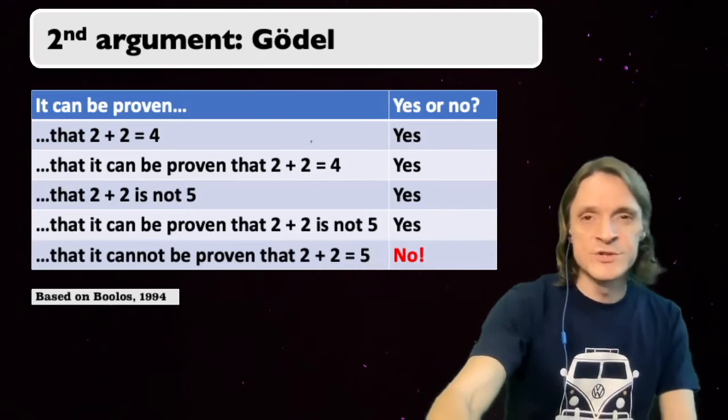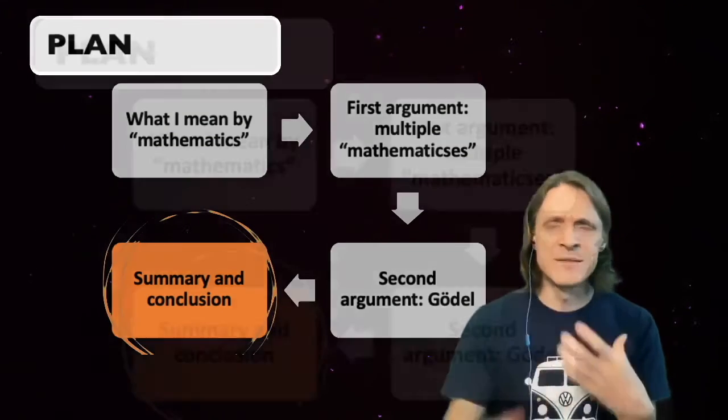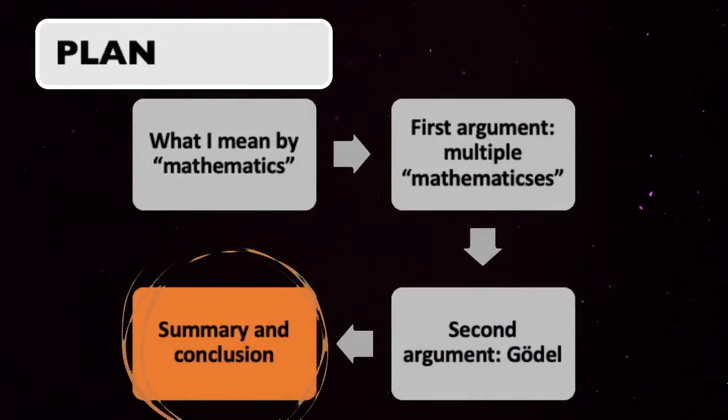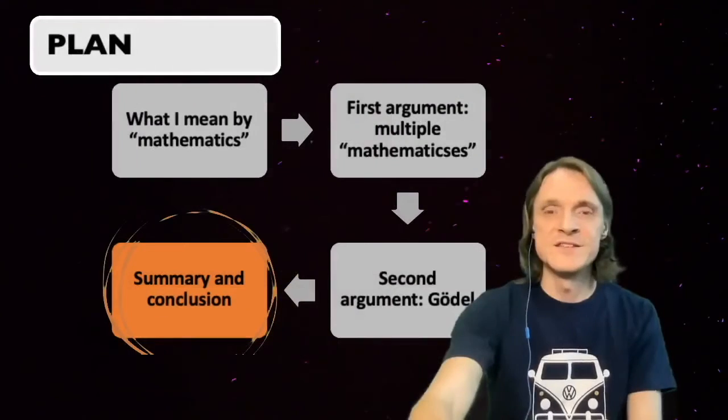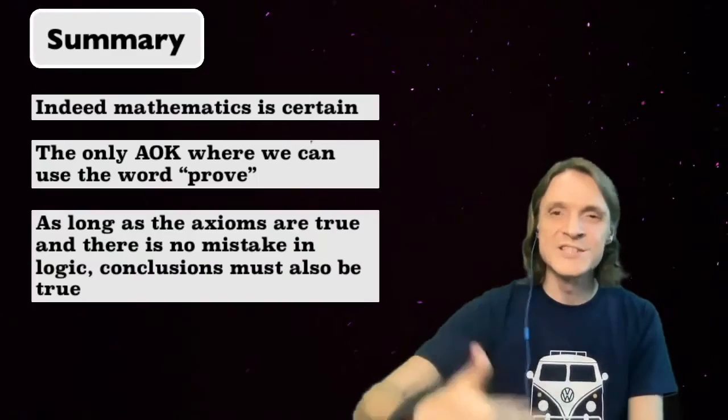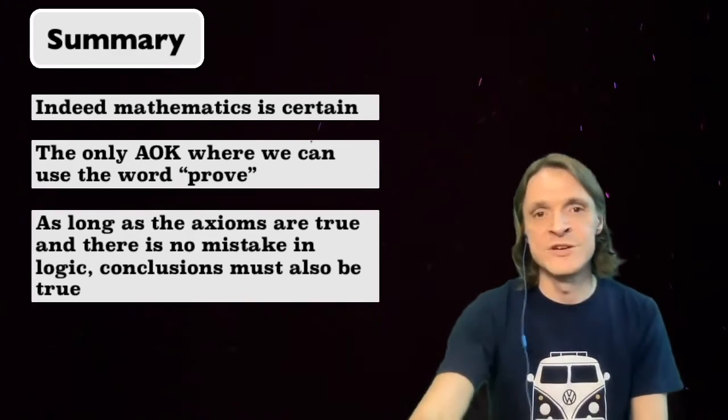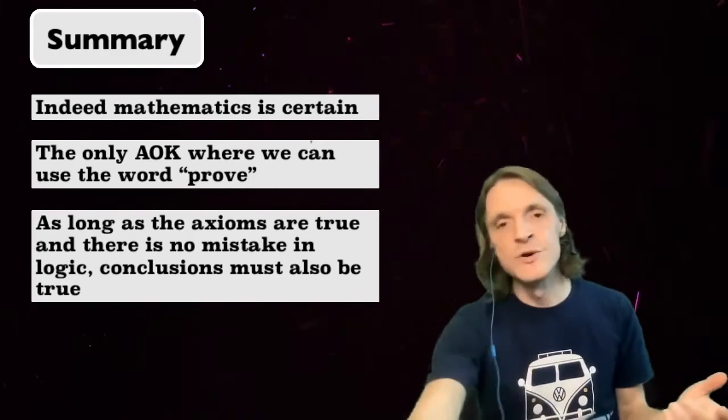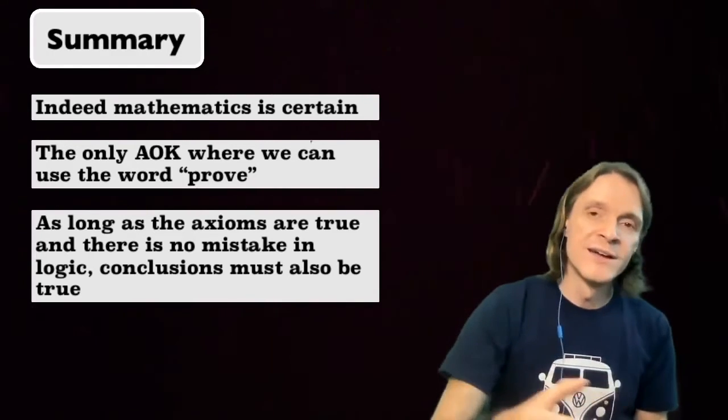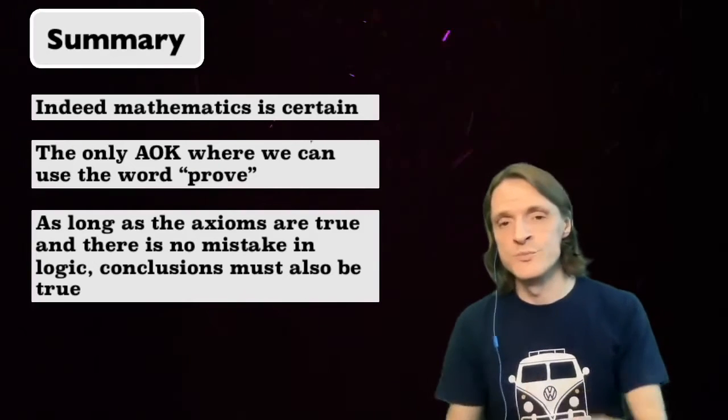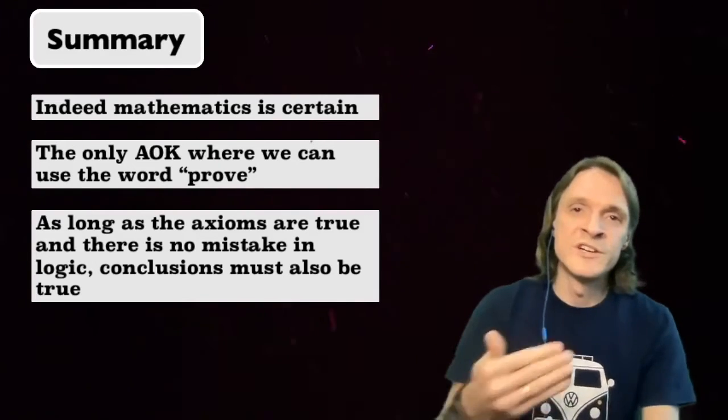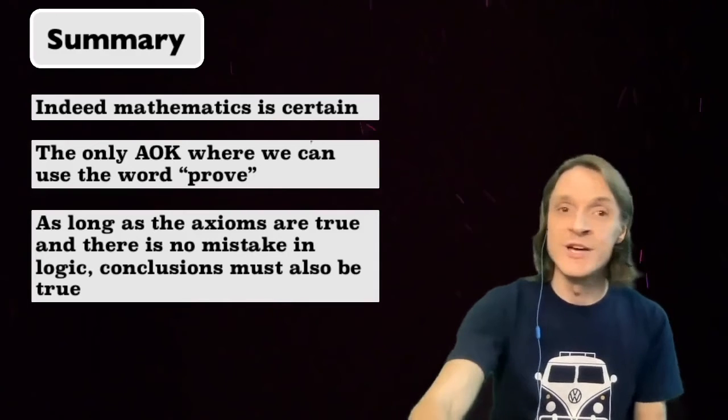So to summarize, what do we have? Indeed, mathematics is certain. In fact, being certain is what sets mathematics apart from other areas of knowledge. Mathematics is the only area of knowledge where we can use the word prove in relation to knowledge. This is because mathematics is based on deductive proof. And in deductive proof, you demonstrate that as long as the axioms are true and there is no mistake in logic, then the conclusions must also be true. Must with 100% certainty everywhere and at all times.